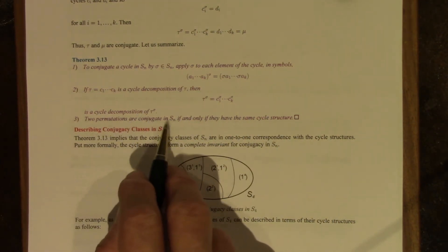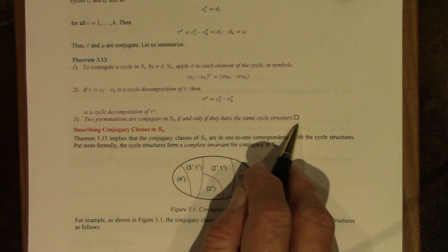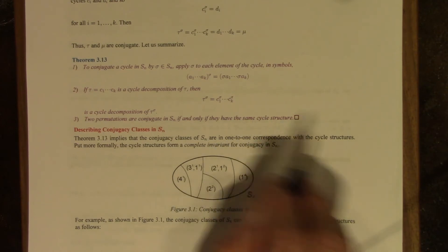Two permutations are conjugate in Sn if and only if they have the same cycle structure. That's a marvelous result.